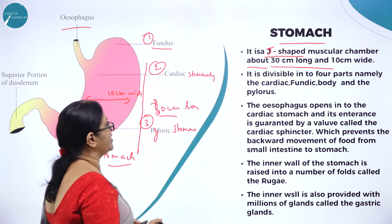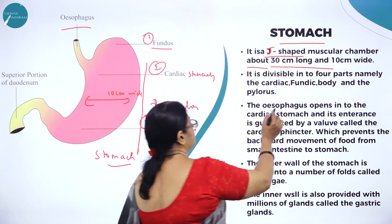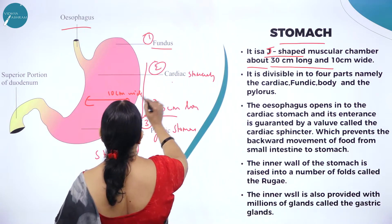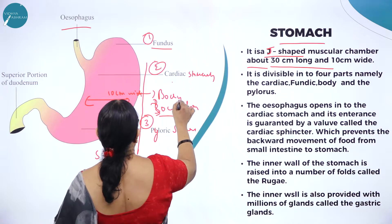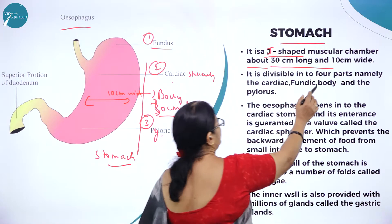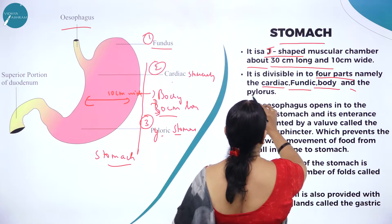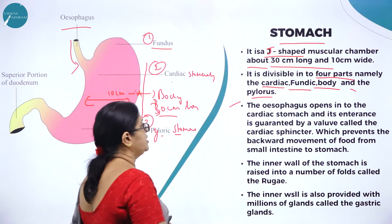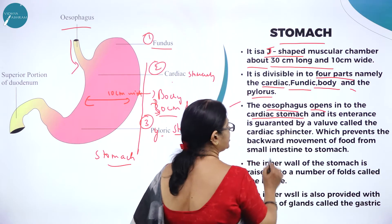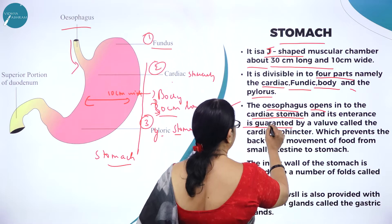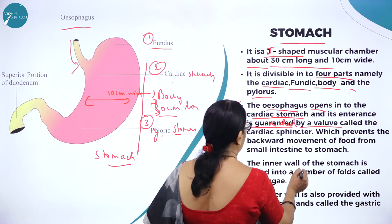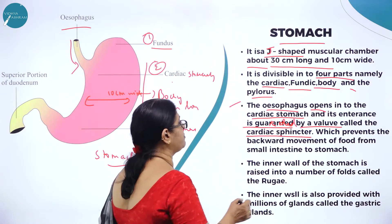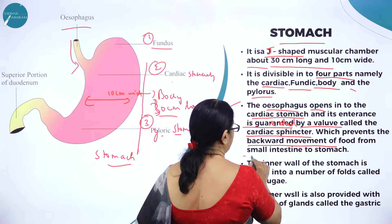The stomach is actually divided into four parts: cardiac, fundic, body, and pylorus. The esophagus opens into the cardiac stomach and its entrance is guarded by a wall called the cardiac sphincter. This cardiac sphincter prevents the backward movement of food from the small intestine to the stomach. The flow of food is always unidirectional — from the esophagus to the stomach, and from the stomach to the small intestine.